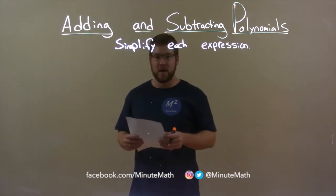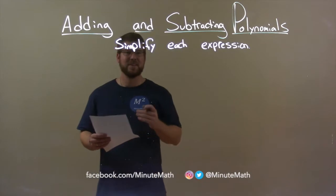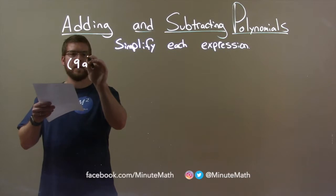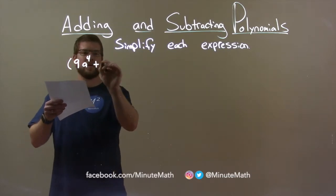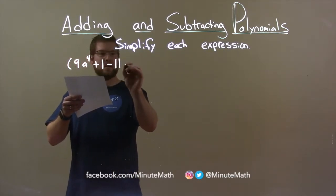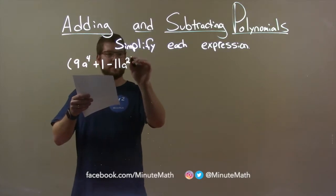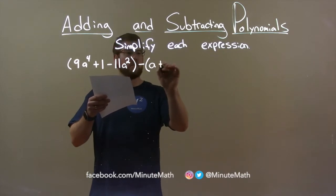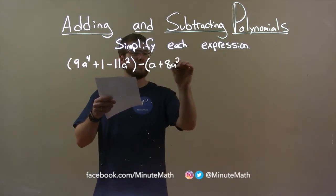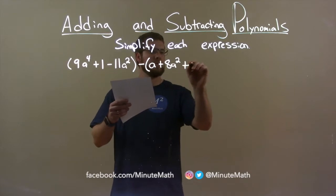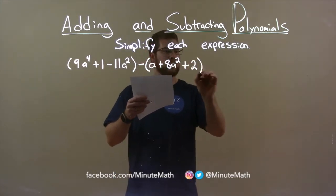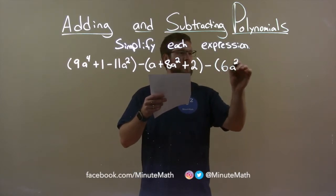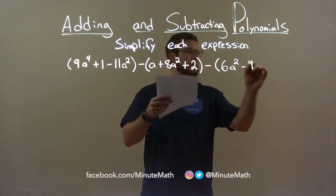We're going to simplify each expression. So, if I was given this expression: 9a to the 4th, plus 1, minus 11a squared, next parenthesis, minus a, plus 8a squared, plus 2, and then minus, last parenthesis, 6a squared, minus 9.